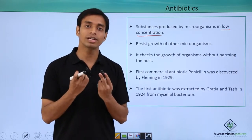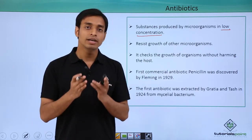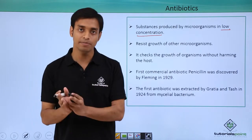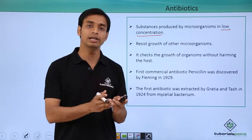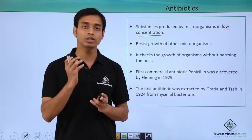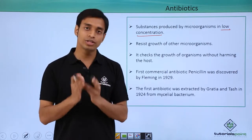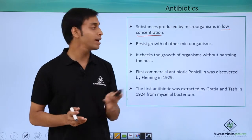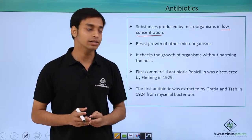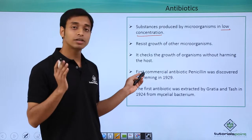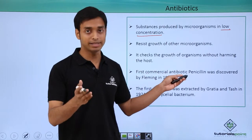If you are using a type of antibiotic in human beings, then the human beings should not be harmed, but the target bacteria have to be killed or their growth has to be stopped or resisted. This is one of the most important characteristics of antibiotics which we are using medicinally. The first commercial antibiotic was penicillin.